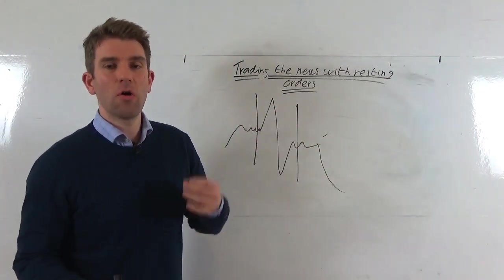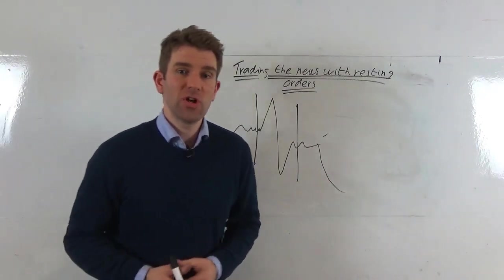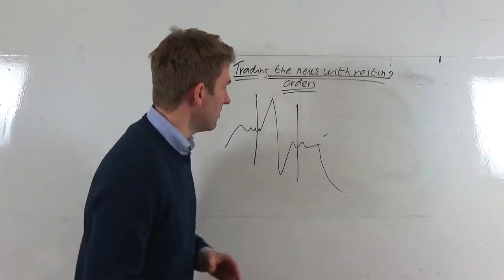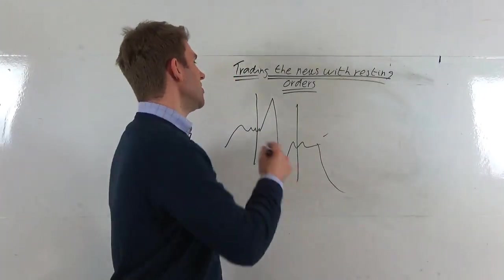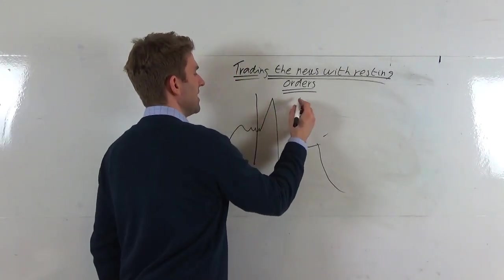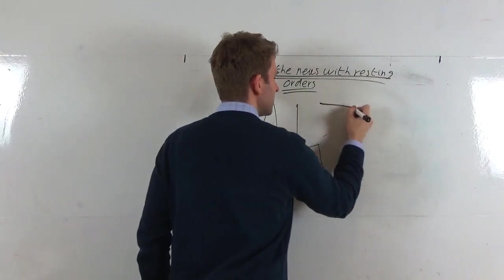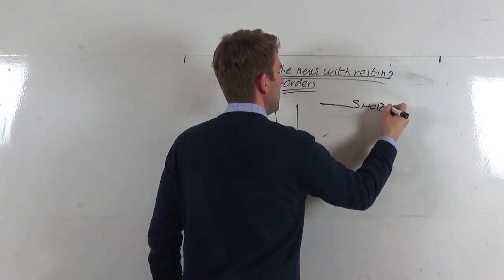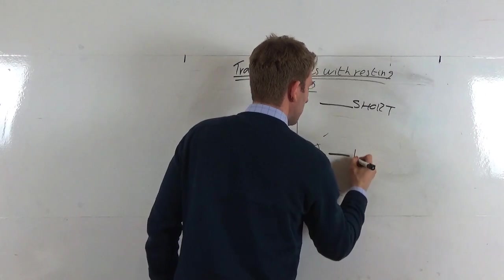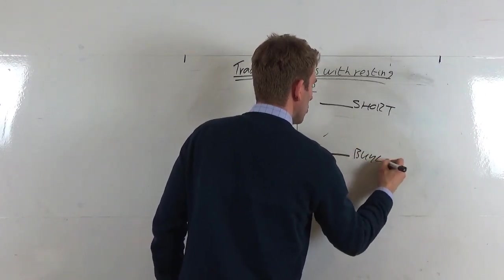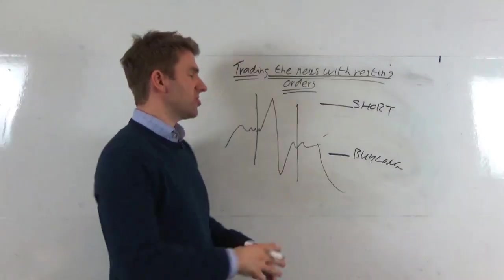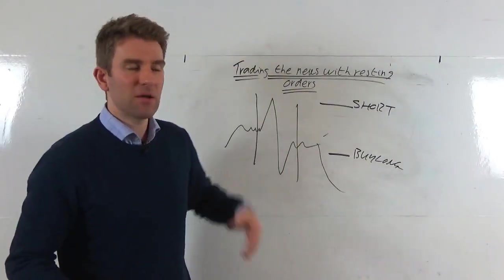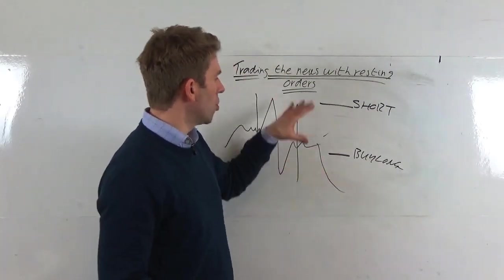So this strategy is to take advantage of that. Now some of you watching going 'I can get my face completely ripped off' and yes, I agree you can. However, the idea is that you're fading these levels. So you're putting a resting sell short order at the high and you're putting a resting buy long order at the low.